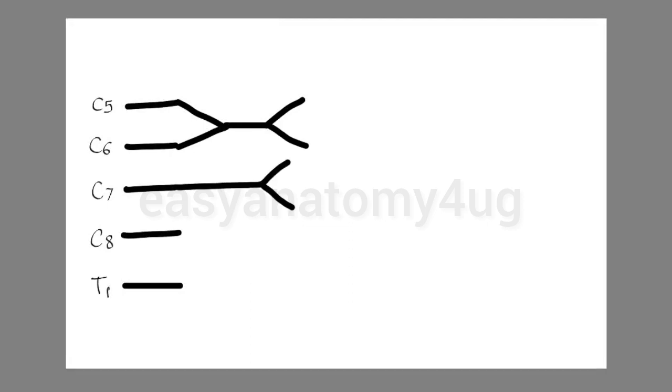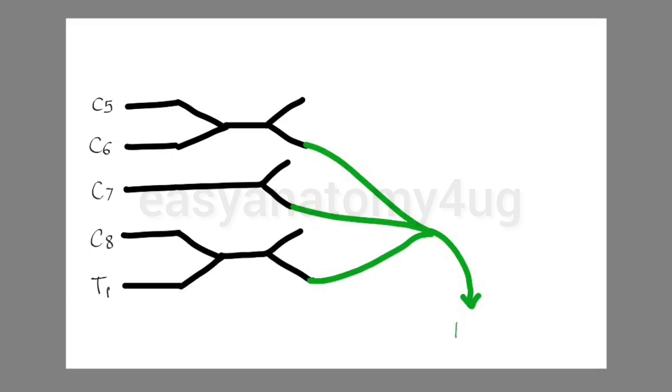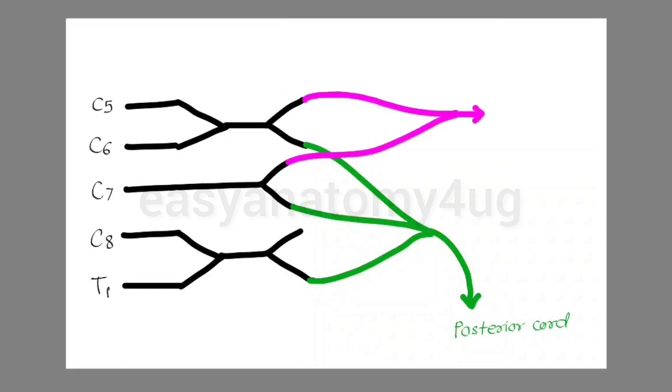For the basic brachial plexus diagram, show the C5 to T1 roots, formation of trunks and divisions, and finally show the formation of cords. This is the posterior cord from all the dorsal divisions, then we have the lateral cord, and the medial cord.